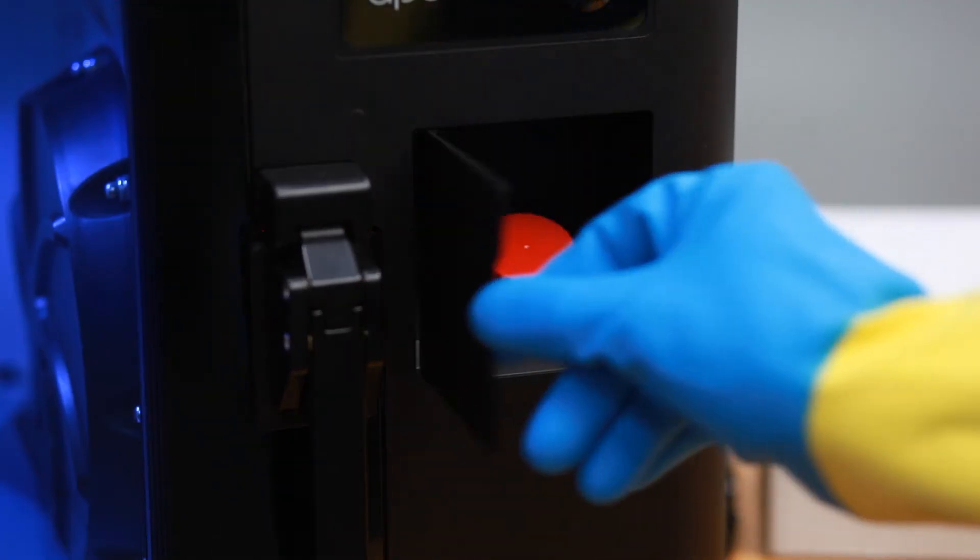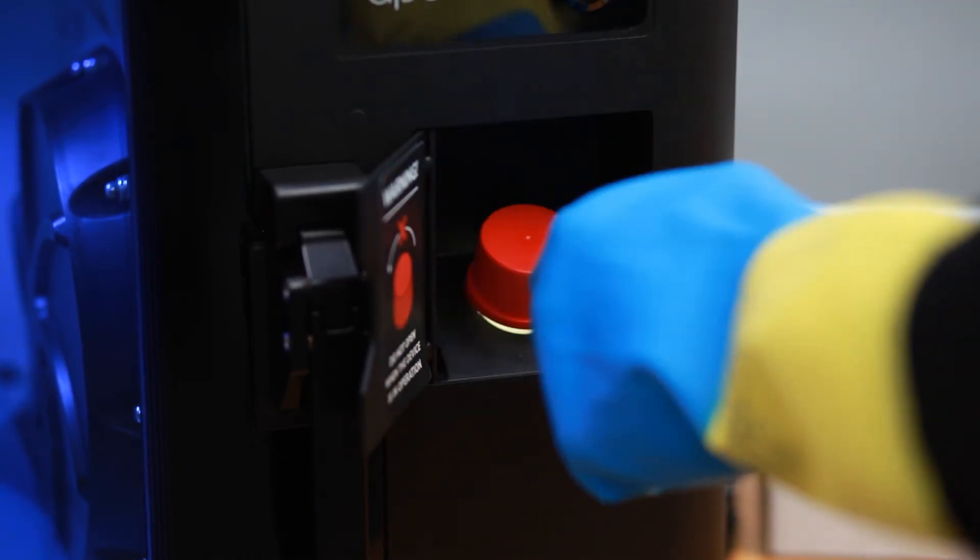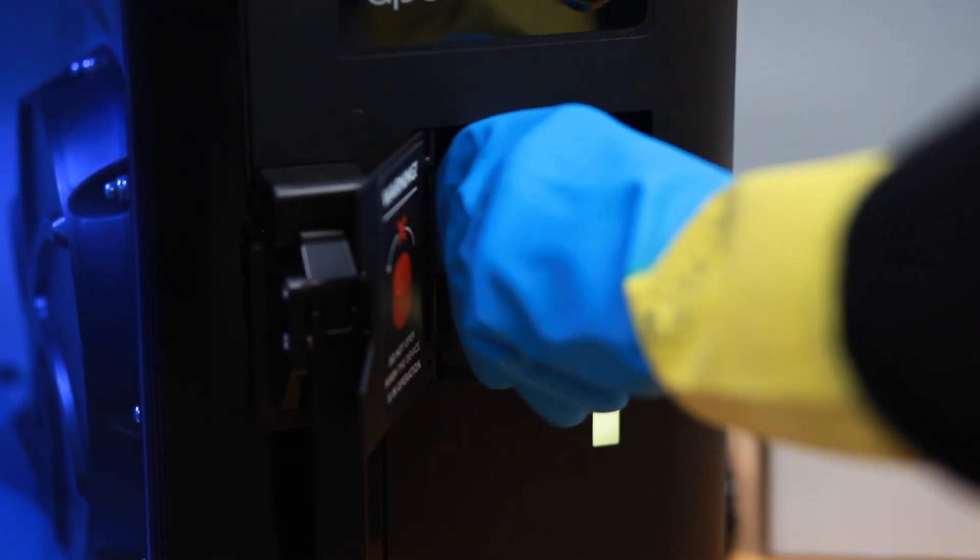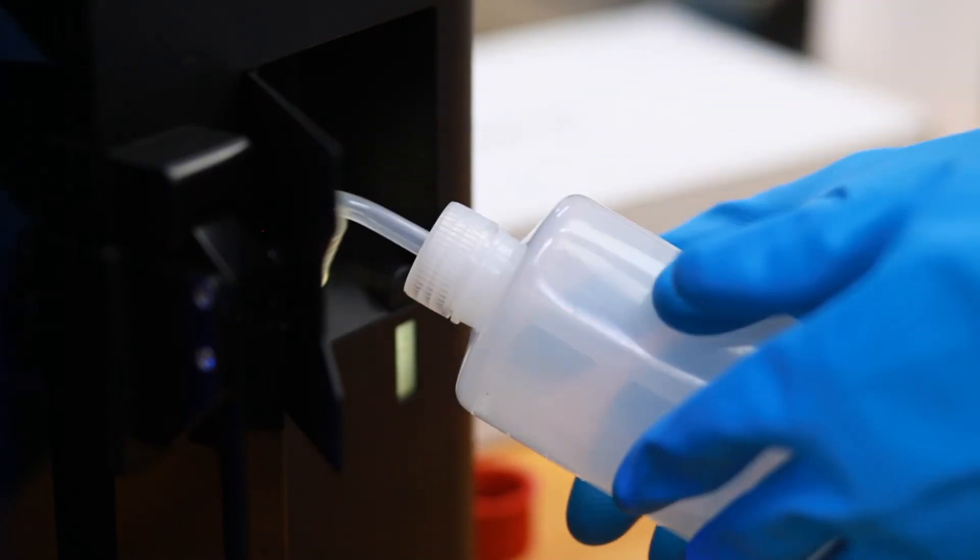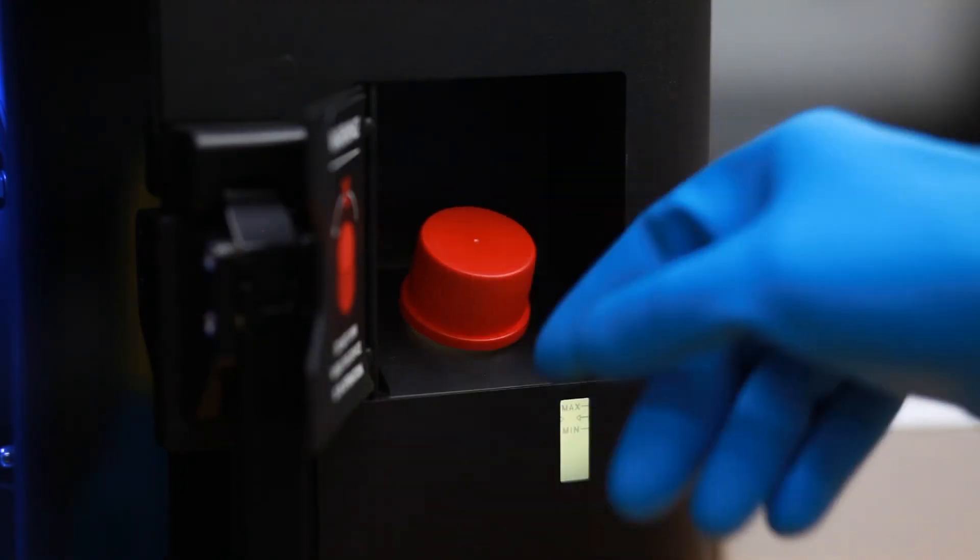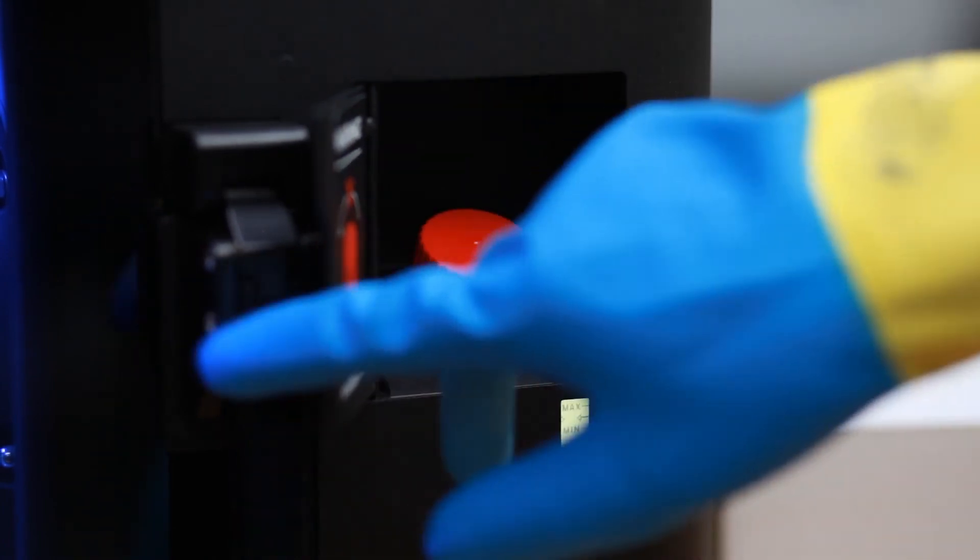If you need to change the type of solvent, follow these steps. Open the filler cover and unscrew the cap. Prepare the wash bottle delivered with the device. Squeeze it and put its nozzle in the solvent tank. Release the bottle to retract as much solvent as possible. Tightly screw the filler cap. Close the filler cover.